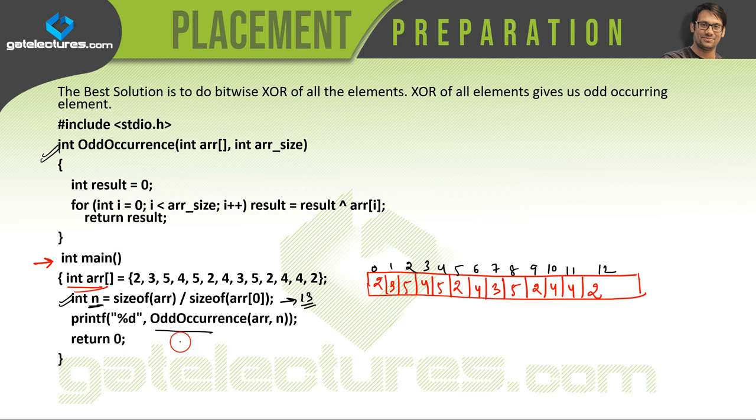So this gives us the size of the array as 13. Now we are calling this function, which is odd occurrence function from here. So control will pass from here and you are passing this reference to this array and the size of this array, which is 13.